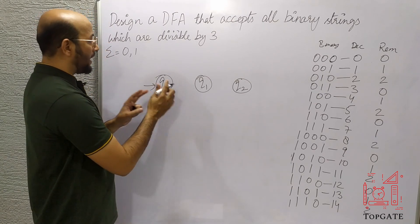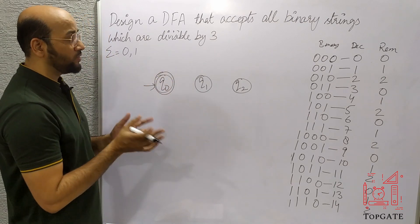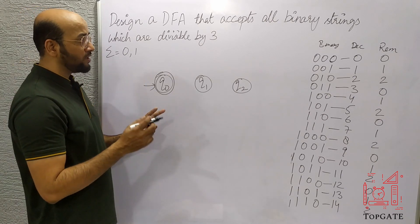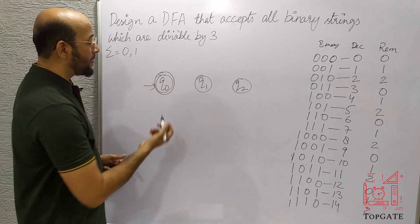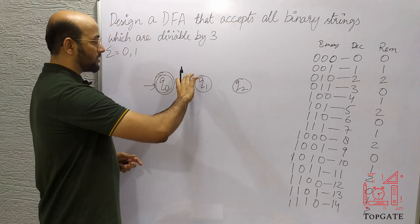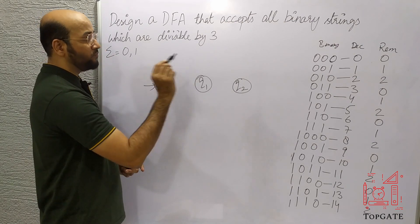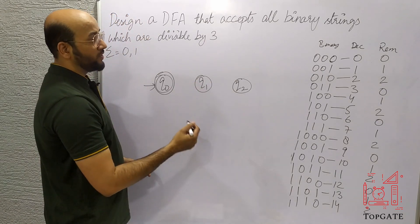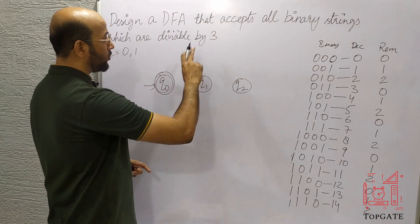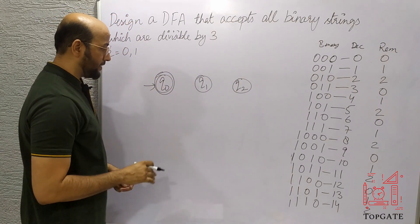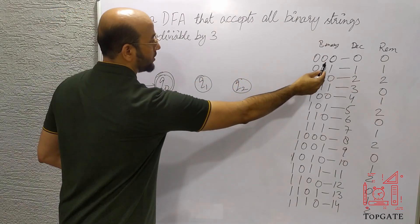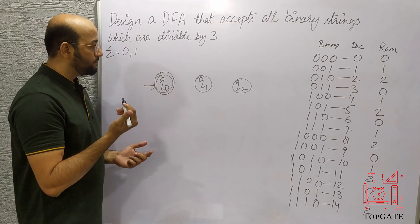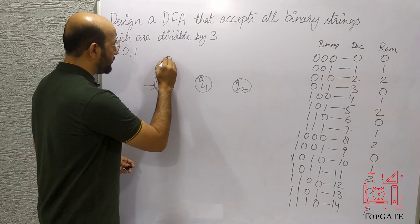Therefore I will make q0 as the final state, since we need to accept only those numbers divisible by 3 where the remainder is 0. At q1 we come only when the remainder is 1, so it is not accepted and not made final. At q2 we come only when the remainder is 2, also not accepted and not made final. Now, 0 is divisible by 3 — dividing 0 by 3 gives remainder 0 — so I add a self-loop on q0 for input 0.